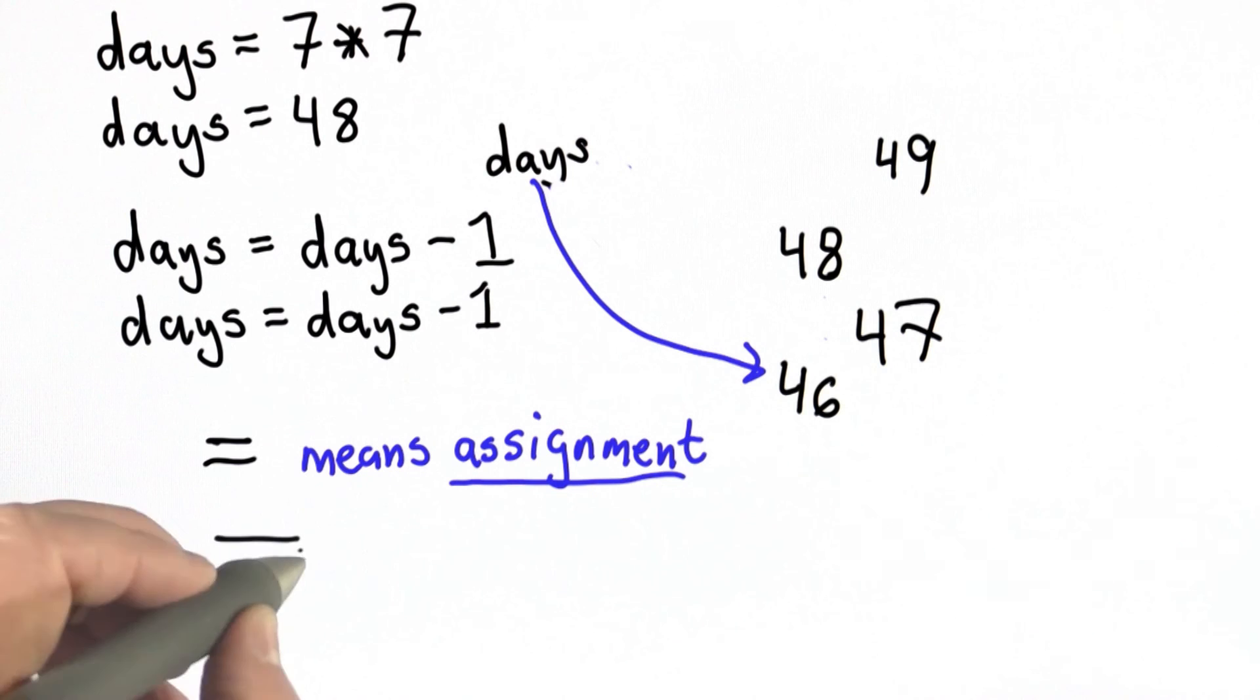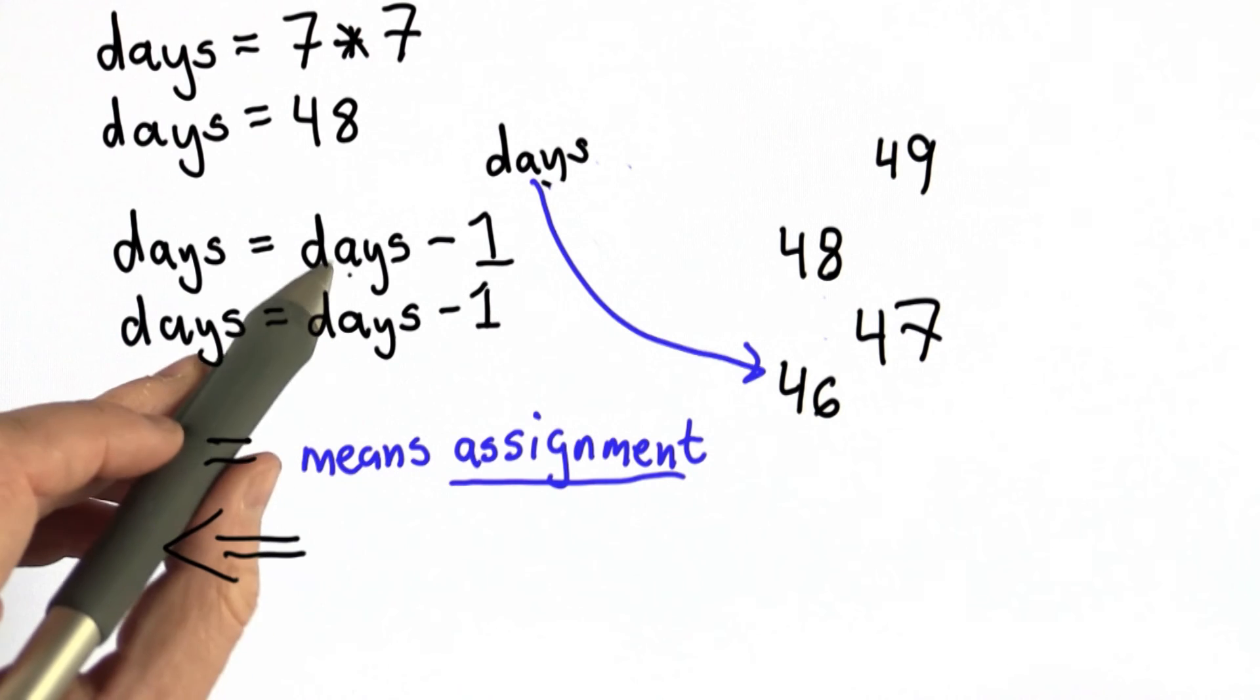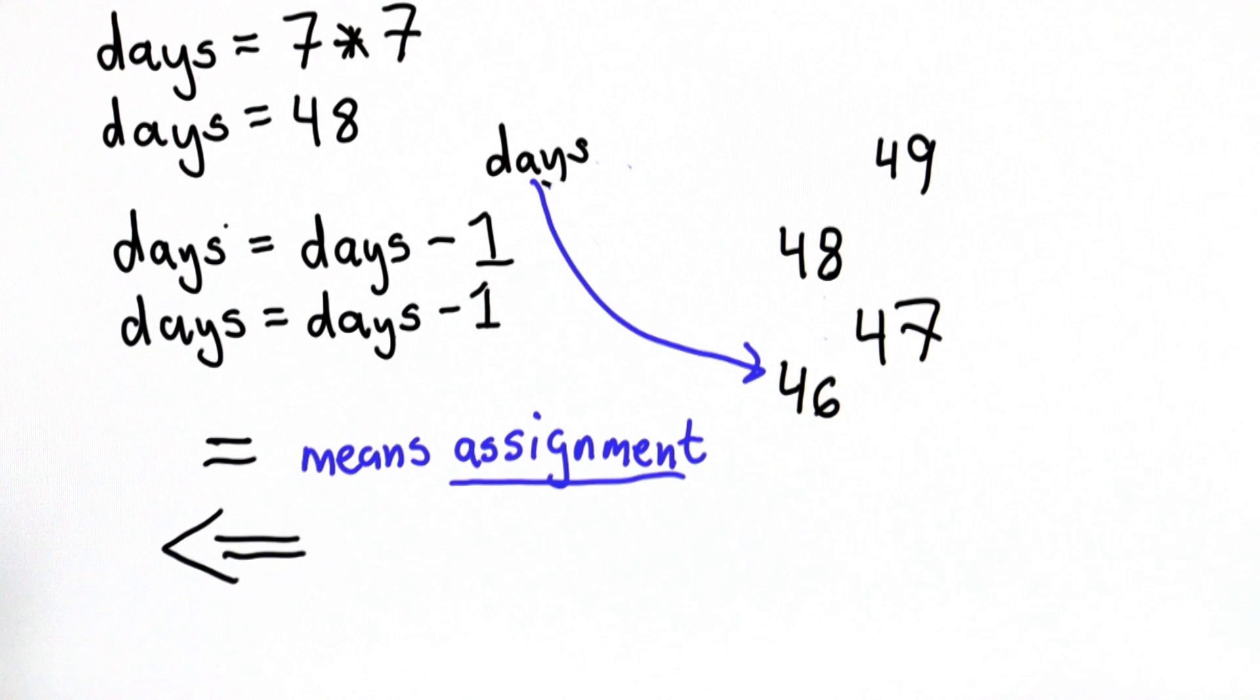You should really think of it as an arrow. It's an arrow saying, put whatever value the right side evaluates to into the name on the left side. We don't write it as an arrow in most programming languages. There's some that do, just because an arrow is harder to type, and lots of programs have lots of assignments. But you should think of the equal sign as not meaning equal. It means assignment.